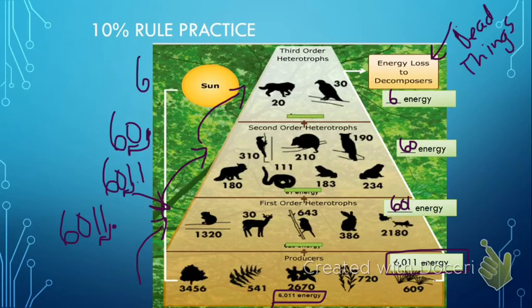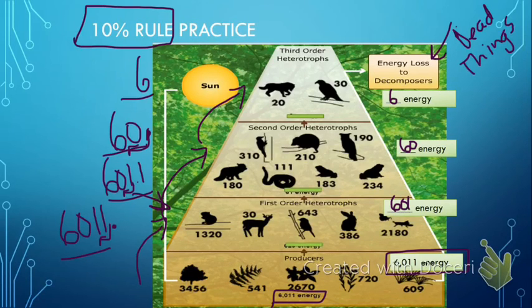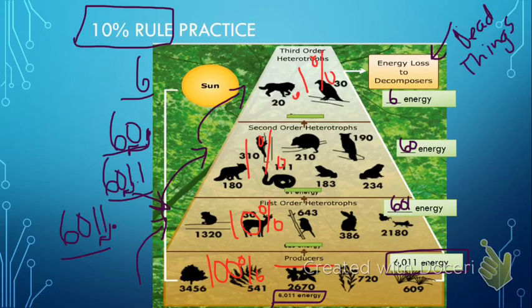I think that is it for this edition of Targeted Tutoring. Once again, this was Targeted Tutoring on the 10% rule. You need to know how to be able to calculate it, both with given numbers of calories and also using percentages. And again, percentages are super duper easy. They're always going to start with producers at 100%, and then you move up from there, 10%, 1%, 0.1%. And if we had an apex predator on top of that, it would be 0.01%. Okay, that's all for this edition. And if you completed this, just make sure you bring me your notes so that I can give you credit. Thanks.